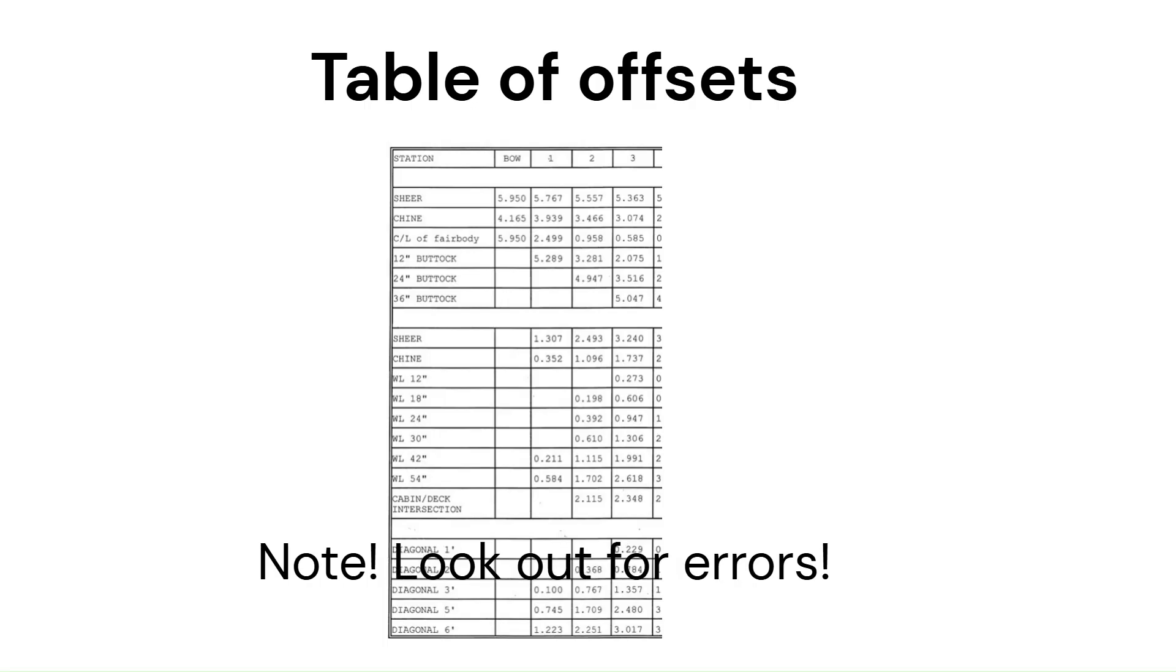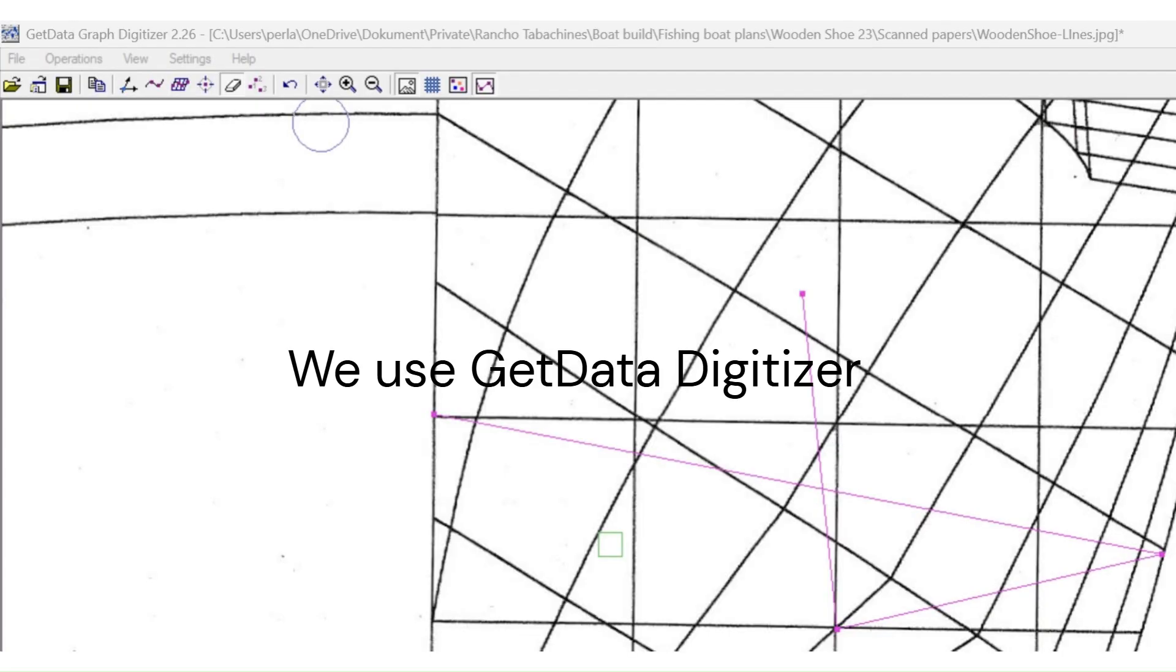Note, there can be errors in the table of offsets. To detect and avoid these, you should use Microsoft Excel to plot the shape or station and compare with digitized values. We use GitDataGraphDigitizer, but there are many other similar software. With a JPG file of the plan, you can see small details, not visible in Adobe PDF.